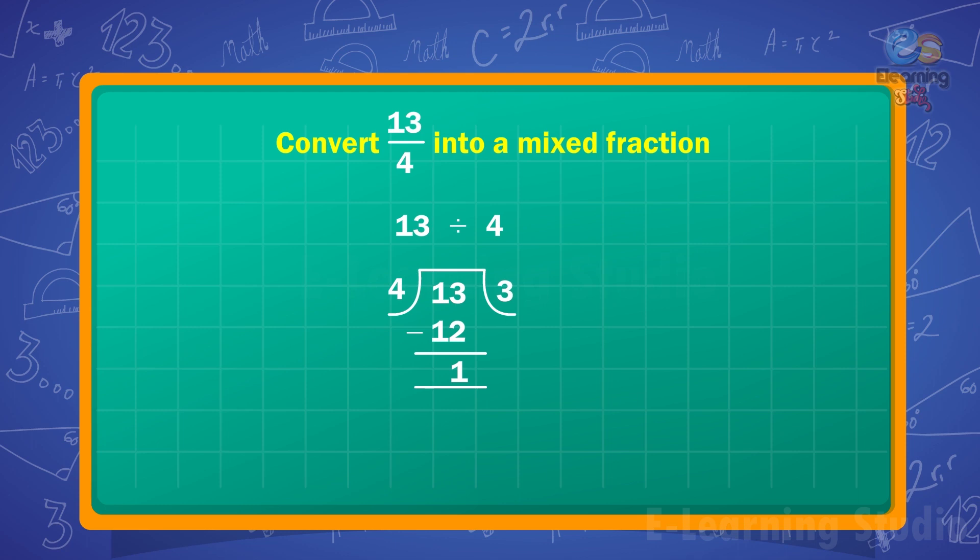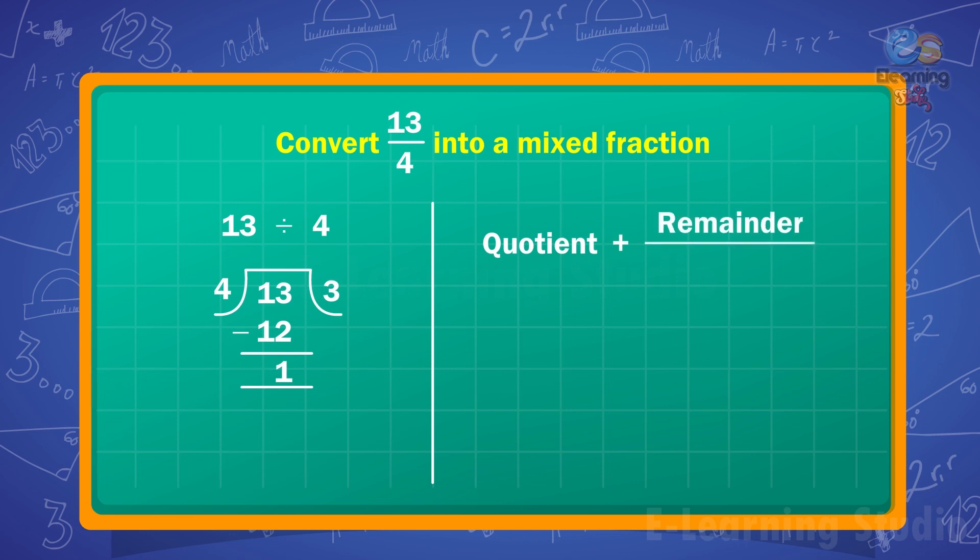Children, the whole number is part of the mixed number, and what is left is 1 upon 4. Now, put all numbers in this form: quotient plus remainder upon divisor. Here, quotient is 3, remainder is 1, and divisor is 4. So 13 upon 4 equals 3 and 1 upon 4.